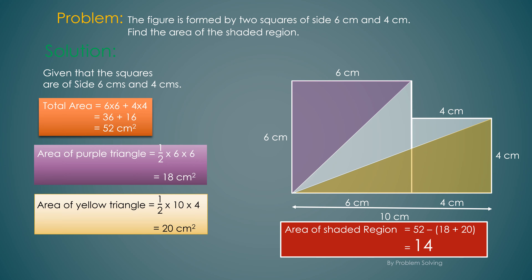Now that we have the area of the unshaded regions and the total area, we subtract them: 52 minus 38 gives us 14 centimeters squared. So the area of the shaded region is 14 centimeters squared.